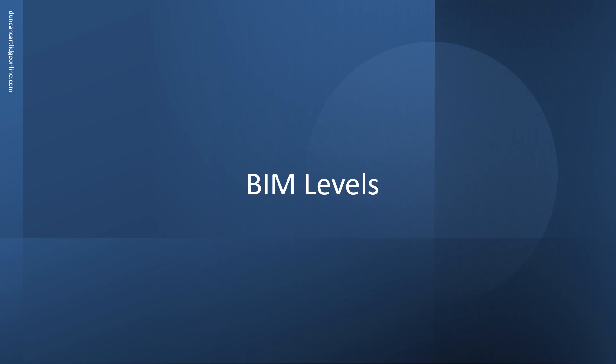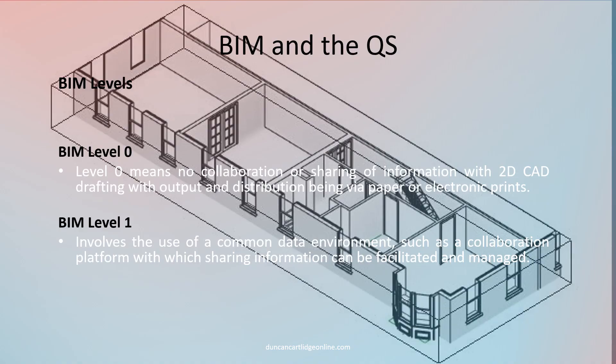BIM is divided into Levels 0 to 6, the levels being an indication of the level of functionality. At the bottom of the pile are BIM Levels 0 and 1. As shown here, Level 0 delivers no collaboration — back to silo working — while Level 1 delivers very basic collaboration platforms, more a way of distributing information in real time.